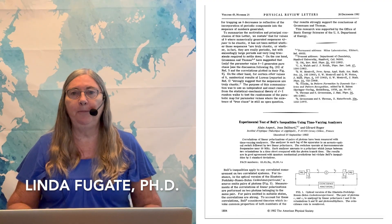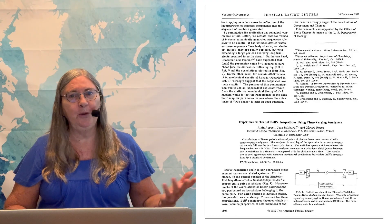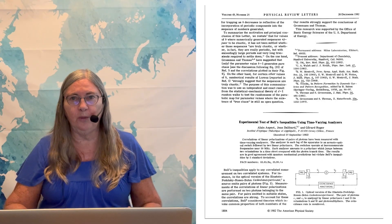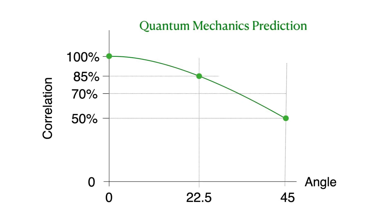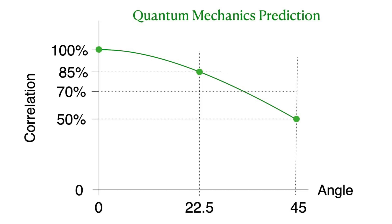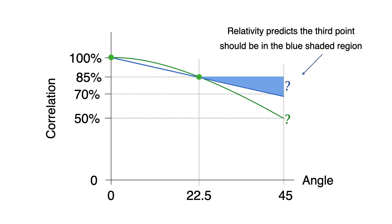This video is about the experiments that made Bell's theorem such a big deal. You can find the original papers online, and I'm going to use a simplified version to make it easier to understand. Suppose we take three measurements: quantum mechanics predicts they should lie on curved lines, and they do — they fit perfectly. However, the way we usually understand relativity, that third point should be up in the blue shaded region. So this appears to be a conflict between relativity and quantum mechanics.